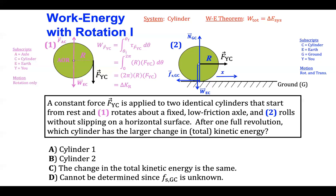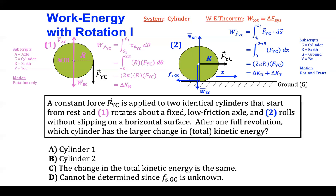The translational motion to the right is going to be affected by the force that you apply to the cylinder to the right. When we calculate the work done by that force, we integrate that force with the differential displacement vector describing how that force moves the cylinder to the right. The force F_YC acts to the right, the object displacement is to the right, and over one full revolution, the cylinder will span a distance of 2πr. Doing that integration gives 2πr times the magnitude of the applied force. That work causes the cylinder to undergo both changes in its rotational kinetic energy and its translational kinetic energy, since it is both rolling and translating at the same time.